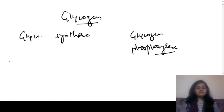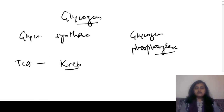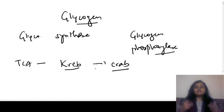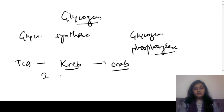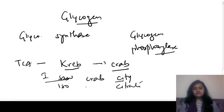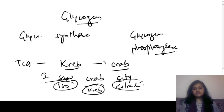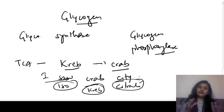For the TCA cycle — which is the Krebs cycle — remember the mnemonic: Krebs means crab. Imagine you saw a crab in the city. 'Iso' plus 'CT' for citrate plus 'crab' for Krebs — that gives you isocitrate dehydrogenase. So for the TCA cycle or Krebs cycle, the rate limiting enzyme is isocitrate dehydrogenase.